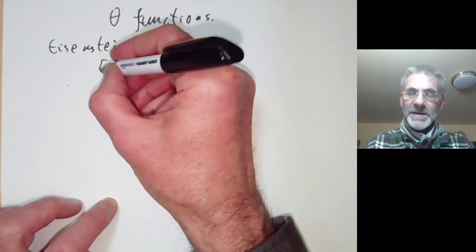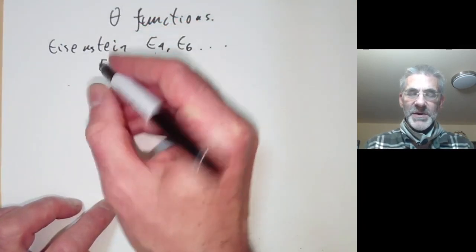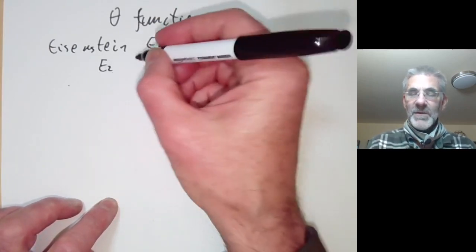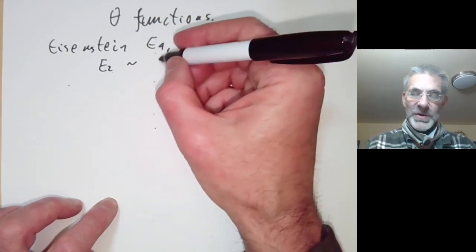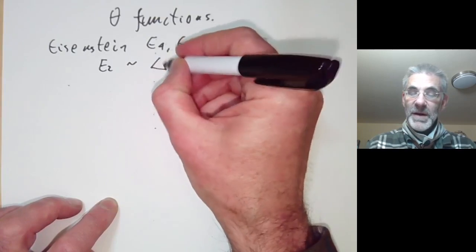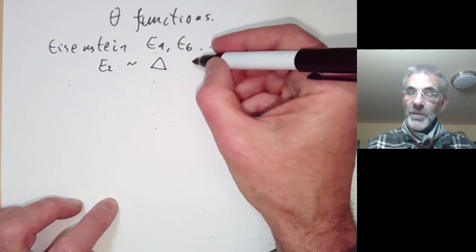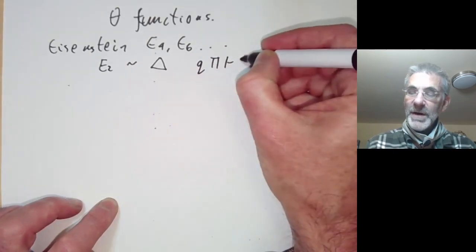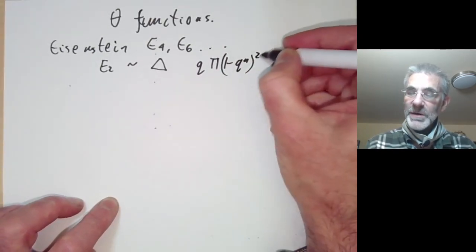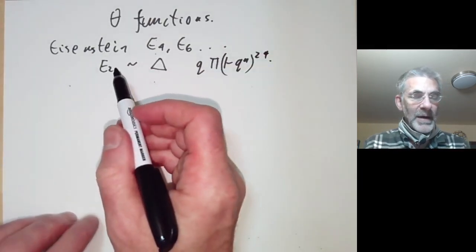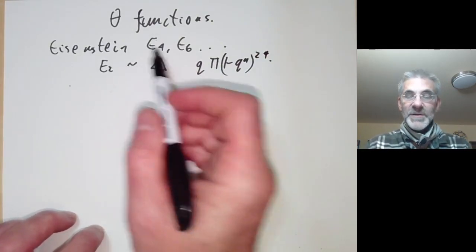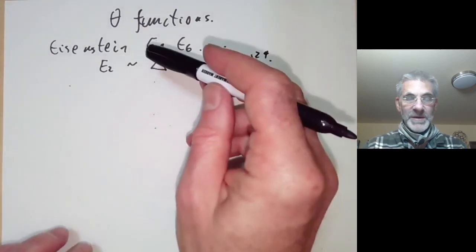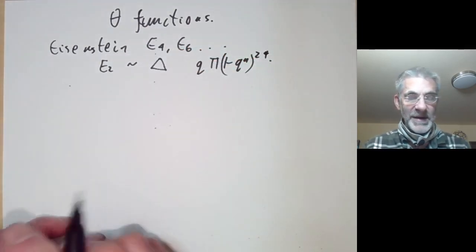There was also an Eisenstein series E2, which was not quite a modular form, but if you fiddle around with it a bit it gave rise to a modular form delta, the discriminant of weight 12, which was q times the product of (1 minus q to the n) to the 24. Theta functions are another way of producing modular forms which don't involve Eisenstein series.